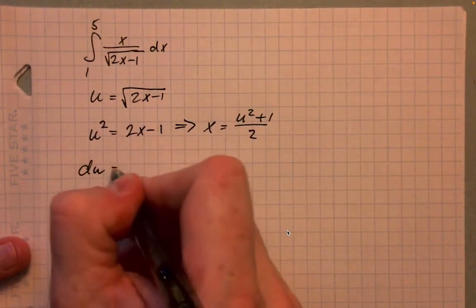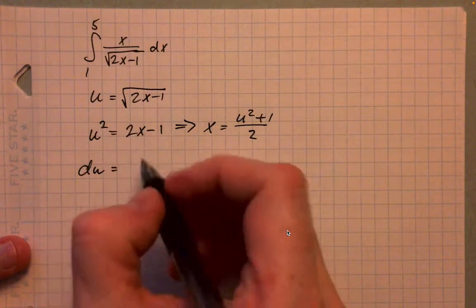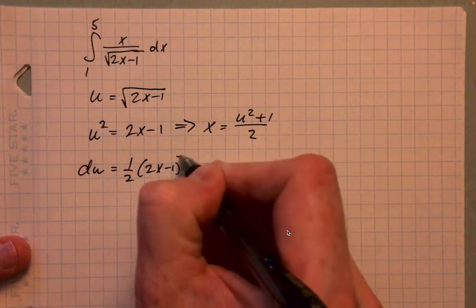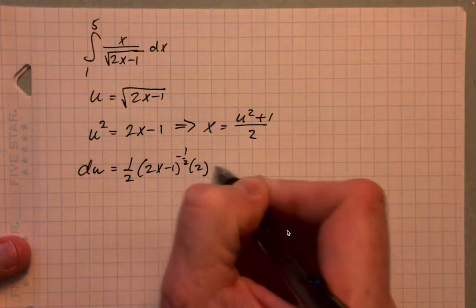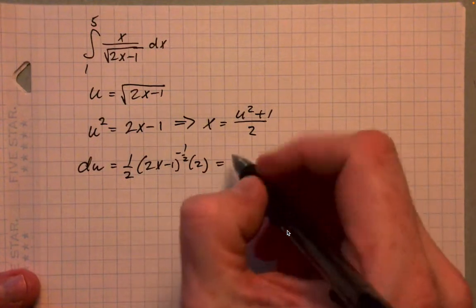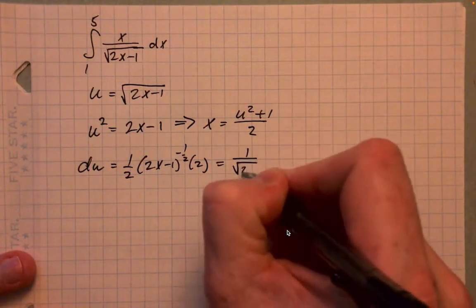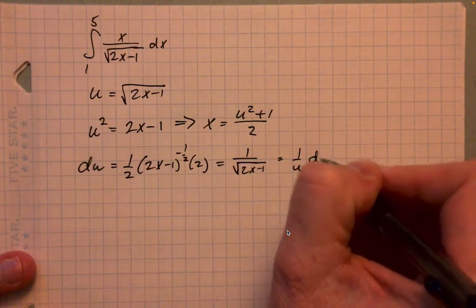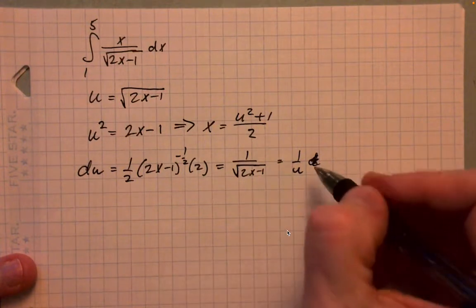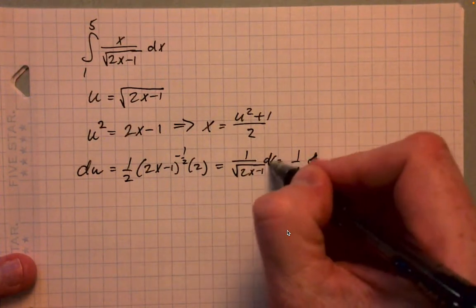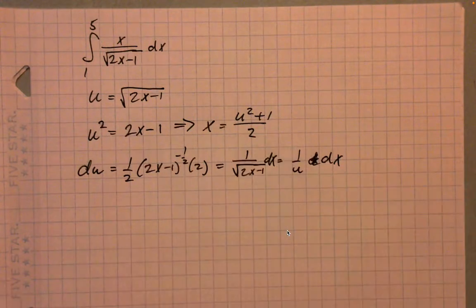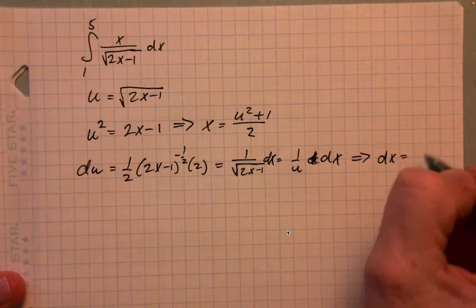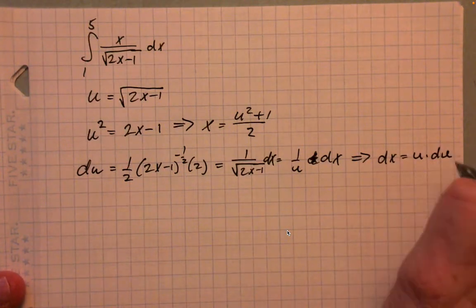If we differentiate u, we have to use the chain rule. So du, the derivative of this, would be 1 half times (2x minus 1) to the negative 1 half times 2, which ultimately we get 1 over the square root of 2x minus 1, which is 1 over u. And so that ultimately implies that dx equals u times du.